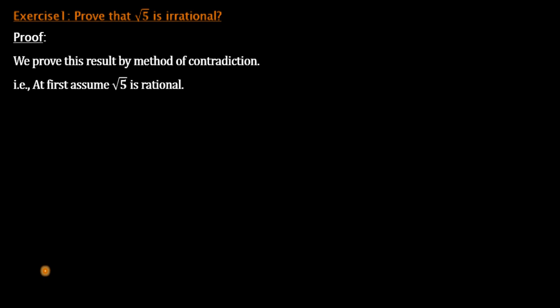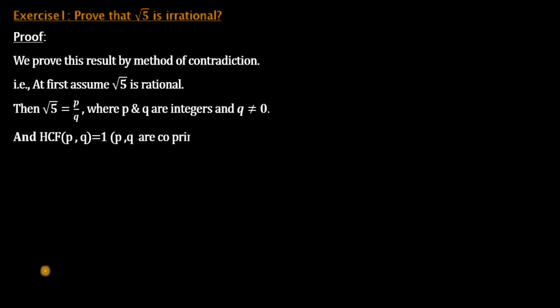Then if √5 is rational, then √5 = P/Q, where P and Q are integers and Q ≠ 0. And HCF(P, Q) = 1, P and Q are co-primes. This is our assumption.